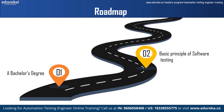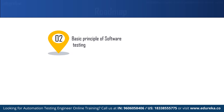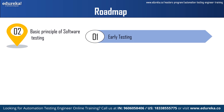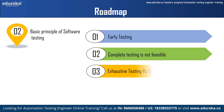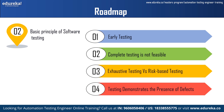Next is the basic principles of software testing, which is an essential component of the software development lifecycle. Key principles for automation test engineers include: early testing, where automated tests are integrated into the development process allowing for early problem identification; complete testing is not feasible, so automated tests should concentrate on critical and highly prioritized areas; exhaustive testing versus risk-based testing, where tests should be prioritized in areas where defects are more likely or have greater business impact; and finally, testing demonstrates the presence of defects but cannot guarantee their absence.